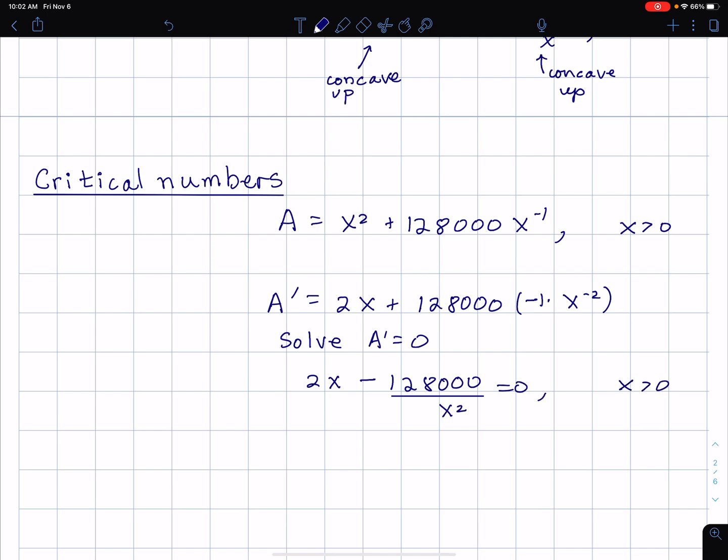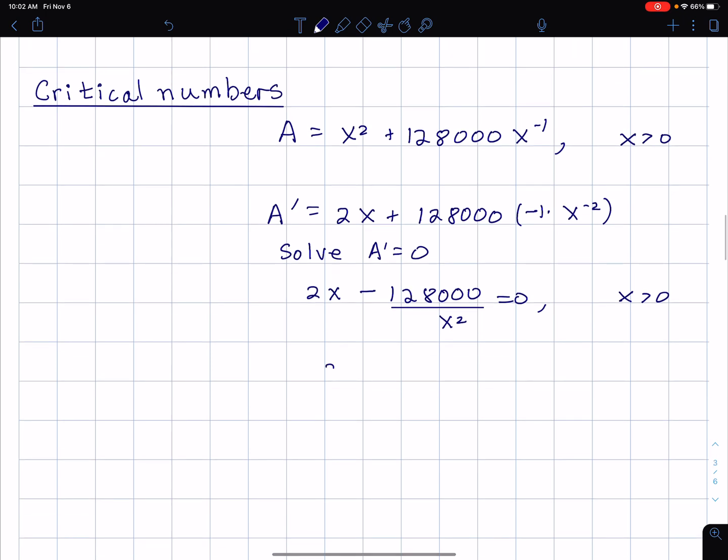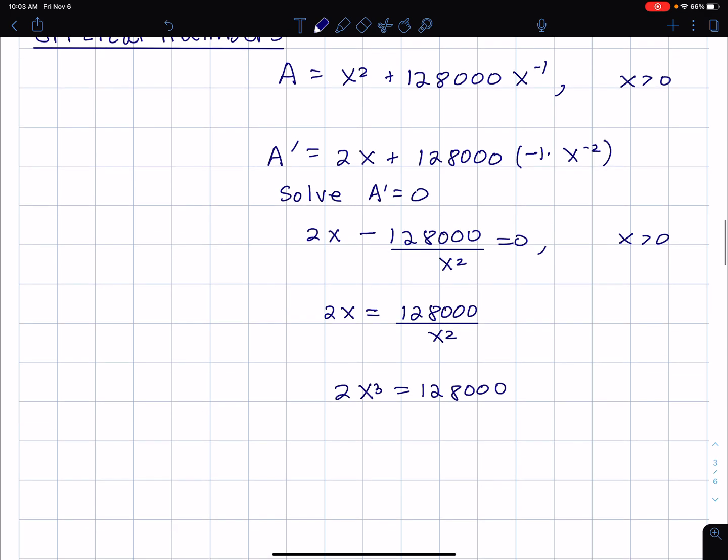Notice throughout x is a dimension, so x is positive. So even though A prime of zero is undefined, zero is not in the domain of A, so I won't consider that a critical number. I'll just add 128,000 over x squared on both sides. Then I can cross-multiply and get 2x cubed equals 128,000. Multiply both sides by x squared.